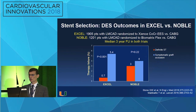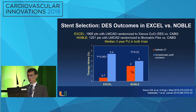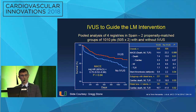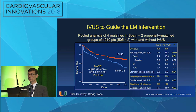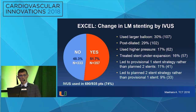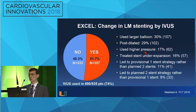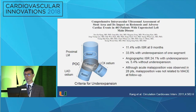In terms of how you want to do the case, you want to select your best stent available. The Nobel trial versus the Excel trial used different stent technologies and the outcomes were quite different. For imaging, this is a very important rule: if we are going to do left main, we need to do imaging and interpret the pictures well. This is a pooled analysis of four registries in Spain showing that MACE outcomes are significantly improved in patients in whom intravascular ultrasound was utilized. In the Excel trial, IVUS was used in about 74% of patients, and in half of them it changed what the doctors did - they used a larger balloon, post-dilated, used higher pressure, or identified stent underexpansion, leading to a planned two-stent strategy rather than provisional one stent.